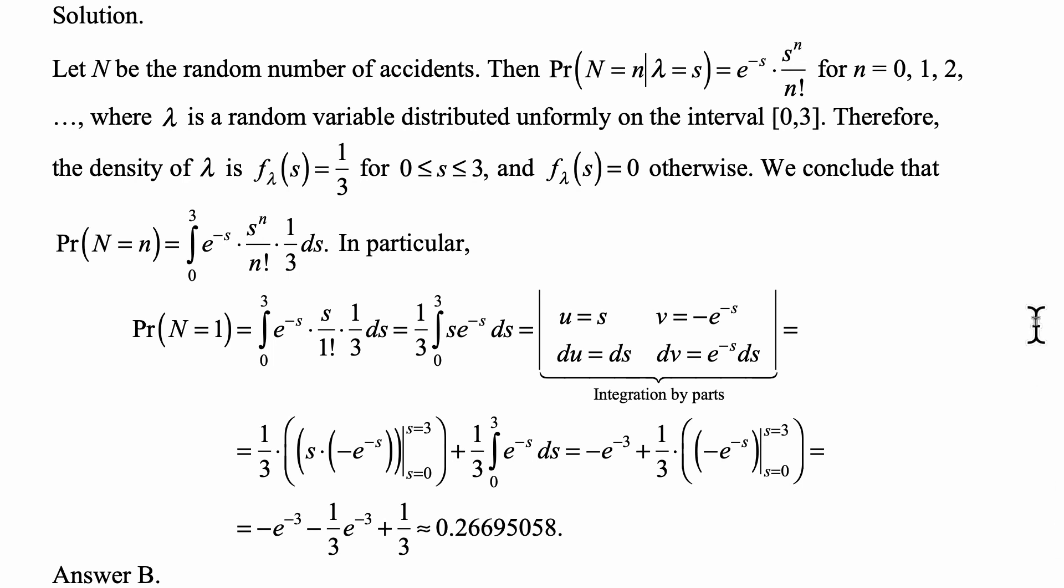Okay, so what is this? Well, this first expression, we evaluated at 0, so it's only the value at 3 that matters, and we get this to be minus e to the minus 3. And the integral is minus e to the minus s, evaluated from 0 to 3, of course multiplied by the coefficient 1/3 in front of it.